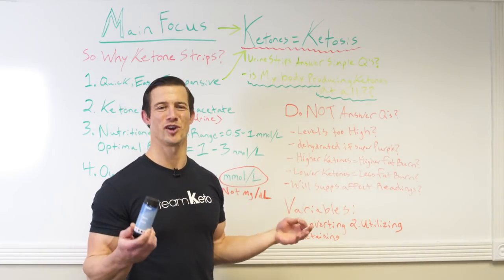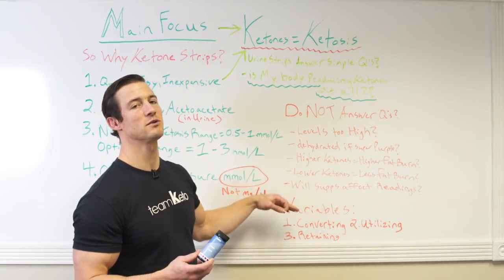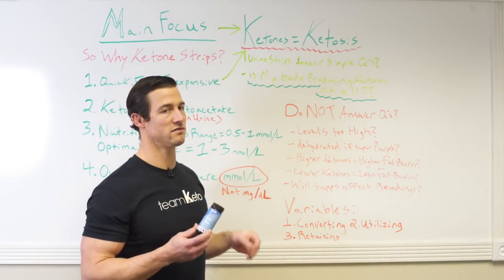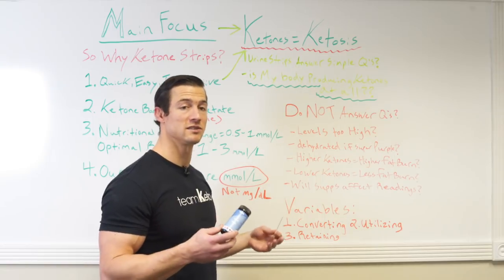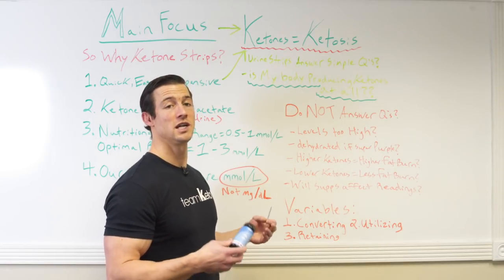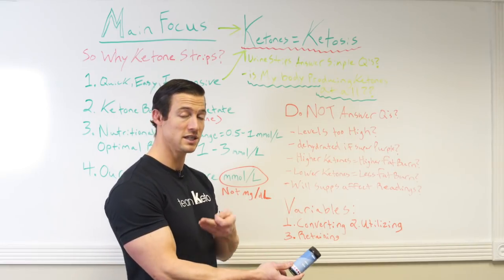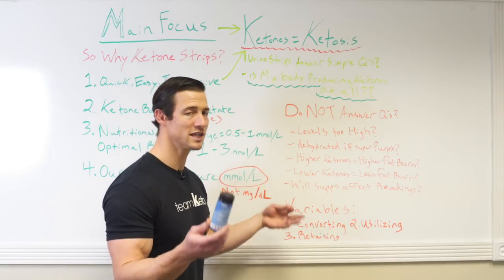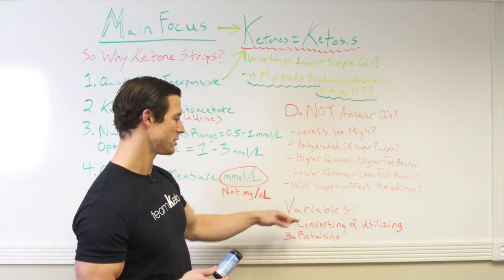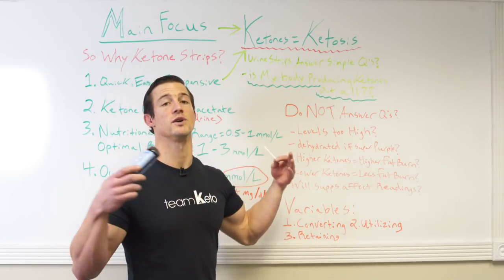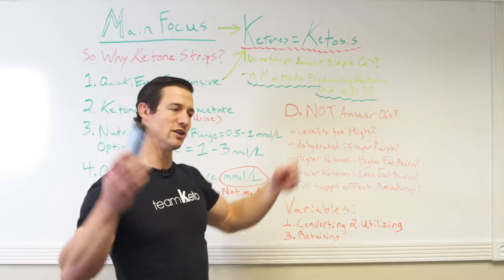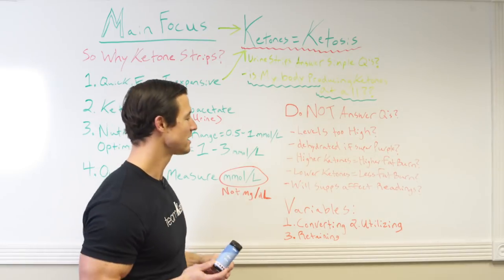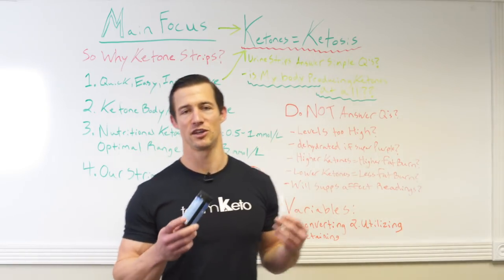Those are the variables, and that's why asking very specific questions — unless you have the meter to test, like the Precision Extra and a few other great ones to test blood ketone levels — will answer some of these questions to a greater extent. But even then there are still so many variables with all three that it's hard to know exactly what's going on unless you literally went into a lab and they took all the tests. So these are the basics of the urine strips, guys.